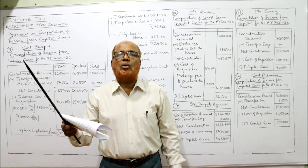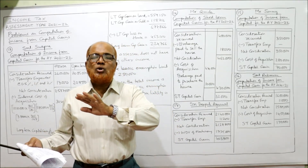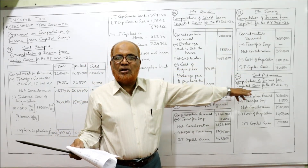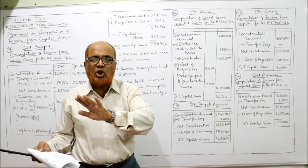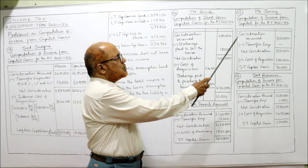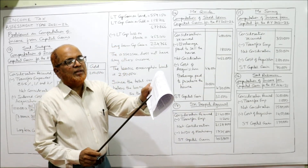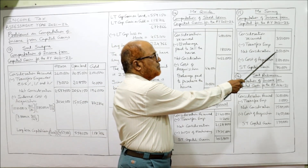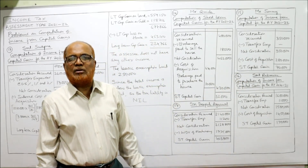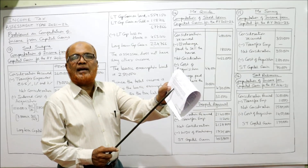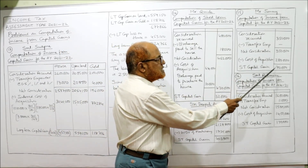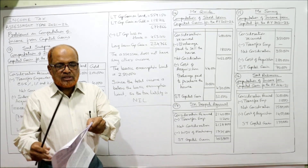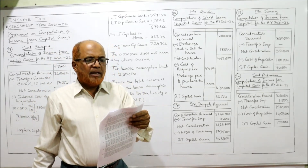For short-term capital gain, the index number should not be considered — ignore it. Computation of capital gain: consideration received = 3,50,000. No transfer expenses are given, so net consideration = 3,50,000. Deduct cost of acquisition = 2,80,000. Short-term capital gain = 70,000.